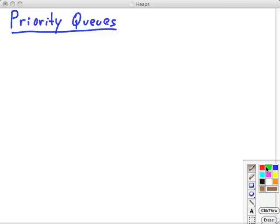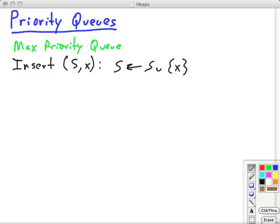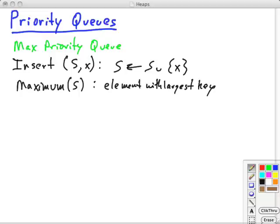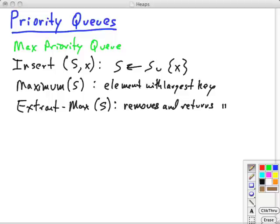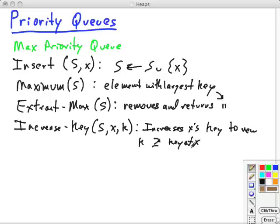So a max priority queue will have the following operations. Insert inserts an item into the priority queue represented by S here. It's a set of elements. Maximum, of course, returns the element with the largest key. That's kind of like top on a stack. It doesn't actually take it out. Whereas extract max is more like pop because it actually takes it out as well as returning it. We'll just say ditto here for element with largest key. And finally, we can sometimes want to change the priority of something that's already in the queue. So we're going to have something called increase key. And this will increase the value of x's key to the new value k. And k has to be greater than or equal to the current key of x.